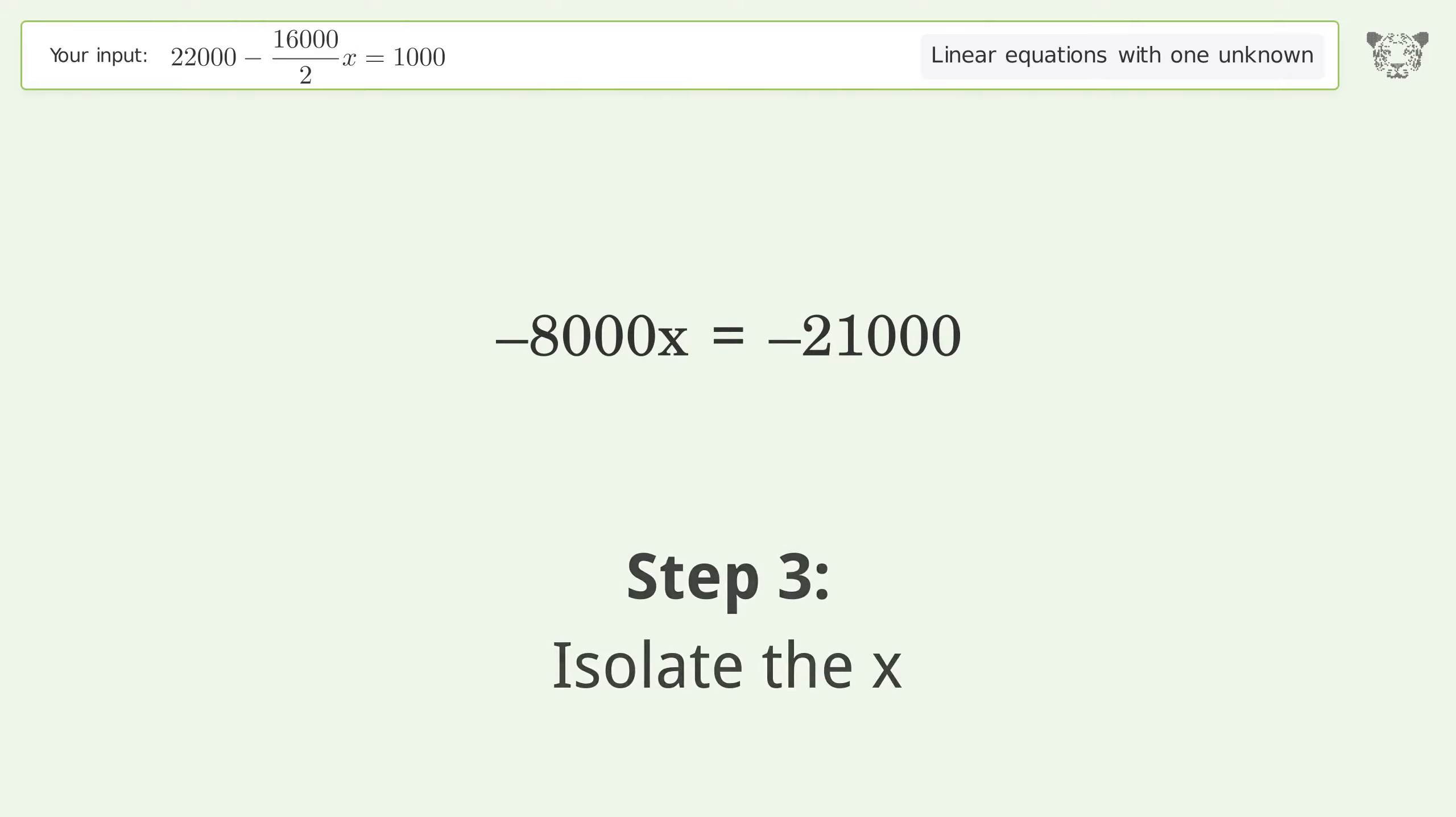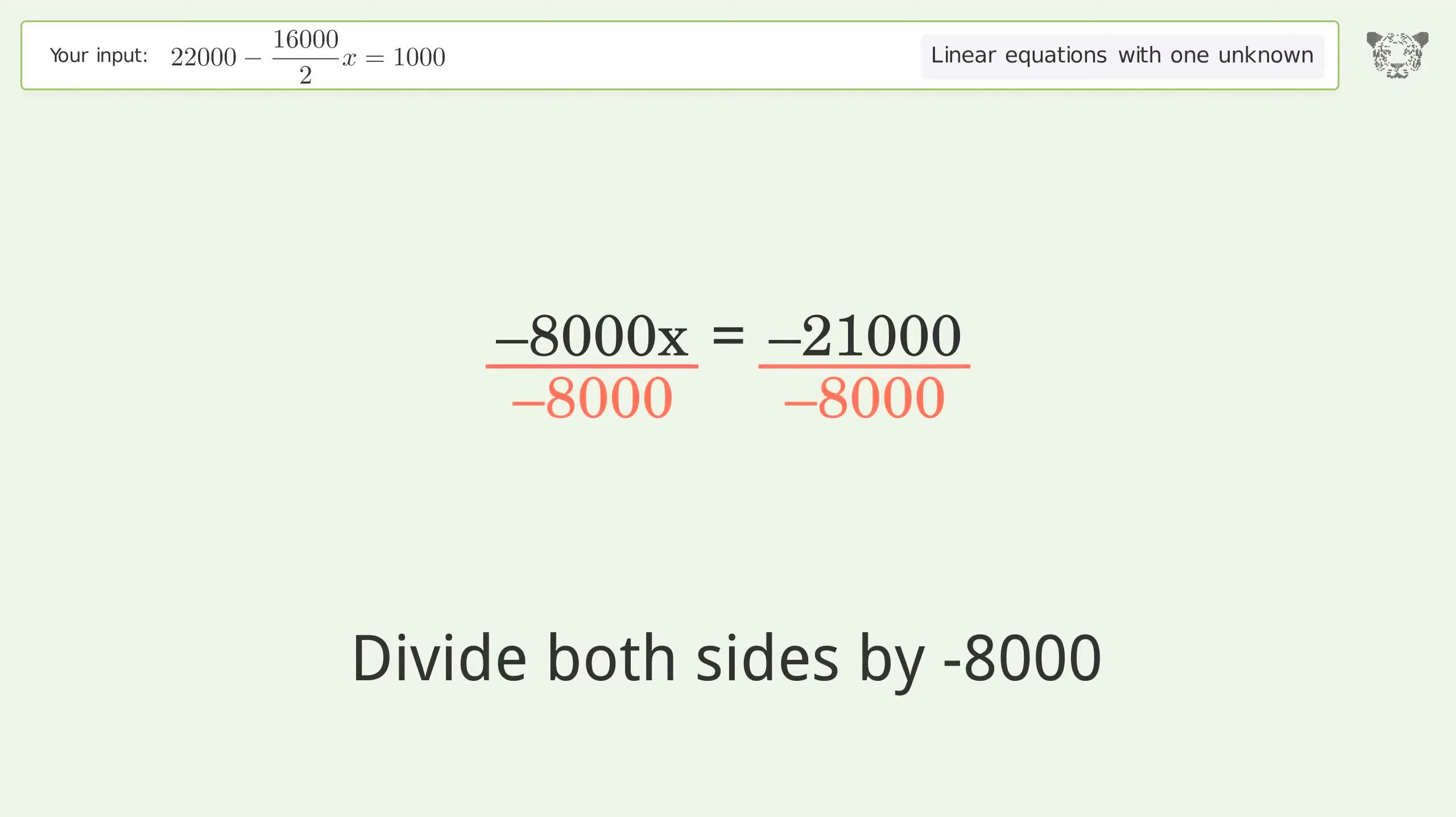Isolate the x. Divide both sides by negative 8,000. Cancel out the negatives.